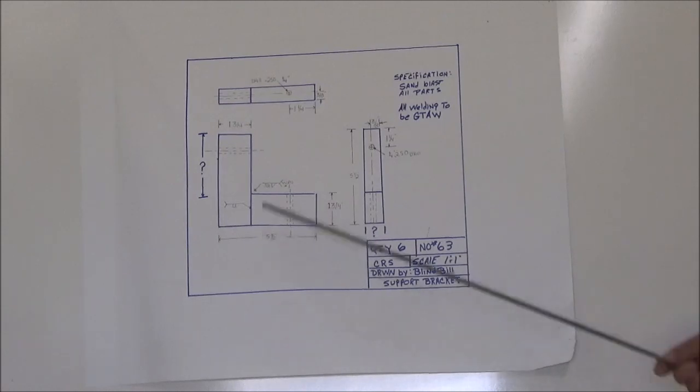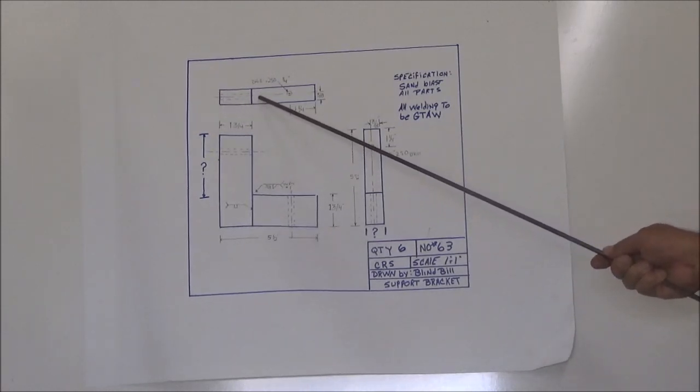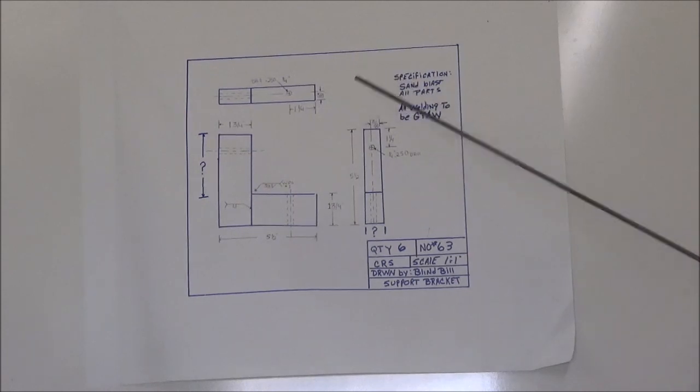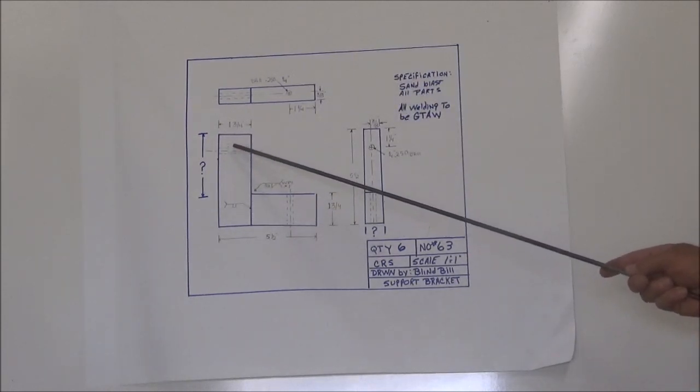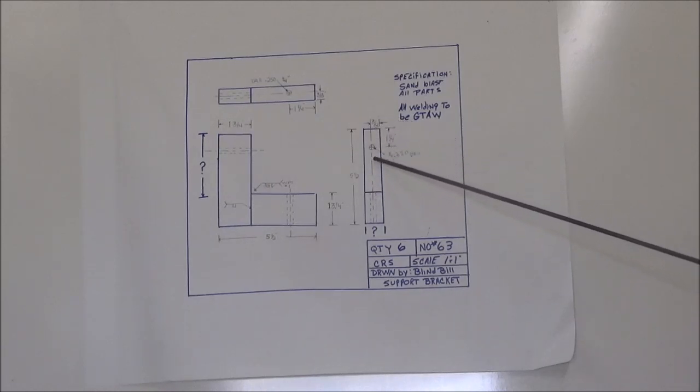Next, we're showing a center line. And notice that this center line goes all the way through the middle of this part. It's showing you the exact center of the part. This is showing you the center of these holes. And notice that this goes all the way through the center of the part. And it's still showing you the center of the hole.